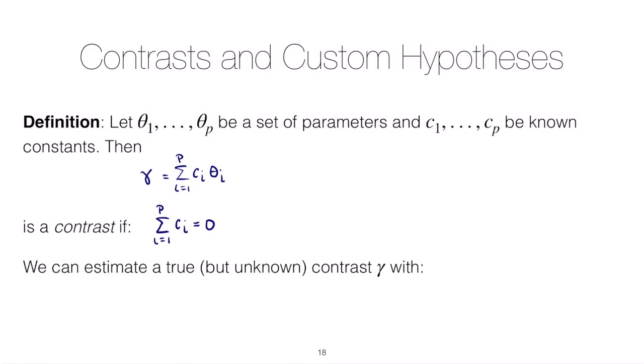Now we can estimate a contrast in the following way. You might say why do we need to estimate it? Well it contains unknown parameters, so if we want to actually use contrast with the sample that we have, we're going to have to estimate it. The obvious choice would be to include anything that you know, so we know the ci's, but then to estimate any quantities that you don't know, for example the theta i's. So we substitute in theta i hat for theta i.